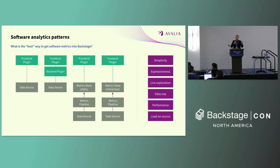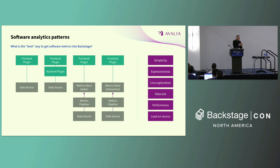However, there are many use cases where you need to decouple data collection and processing from querying and visualization — these are the two patterns on the right. The first is a decoupled pipeline that queries data sources, applies processing, and stores results in a static metric store — just CSV or JSON files served to the renderer. The most sophisticated pattern uses a dynamic metric store like Elasticsearch or OpenSearch, allowing interactive aggregation queries.